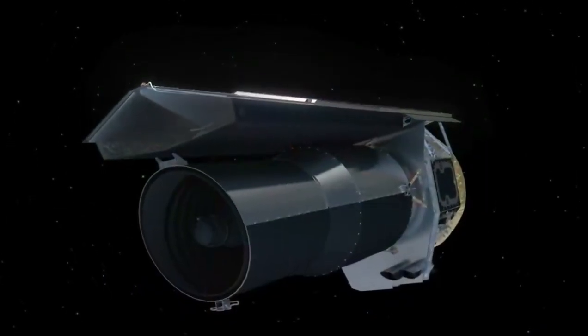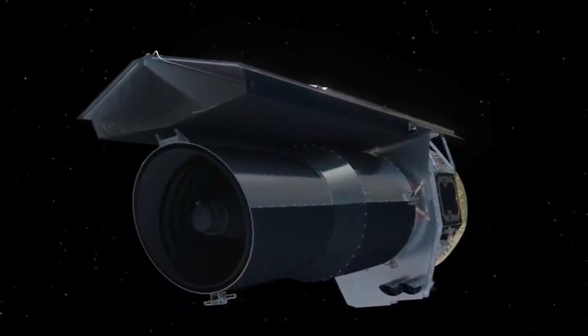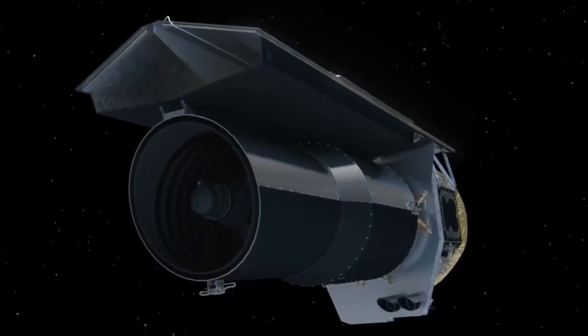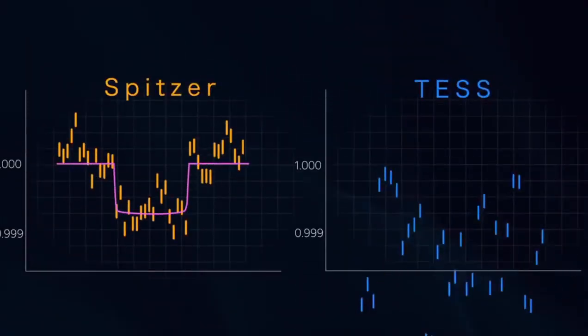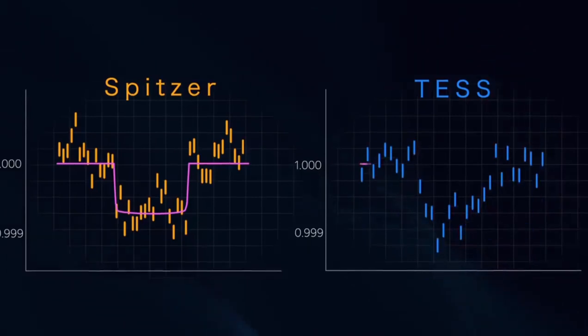Scientists wanted independent confirmation of TOI 700d, so they monitored its star with NASA's Spitzer Space Telescope. Spitzer saw a clear transit from the outer planet, affirming its existence and improving scientists' certainty of the planet's size.